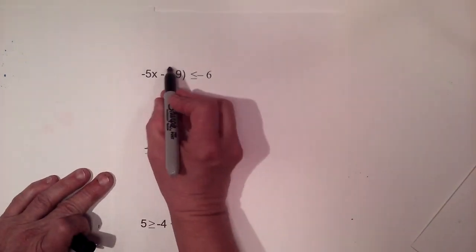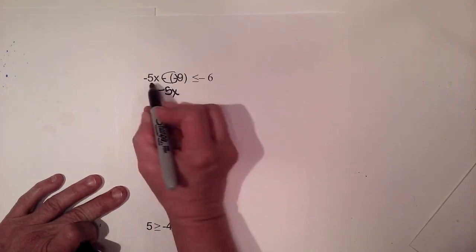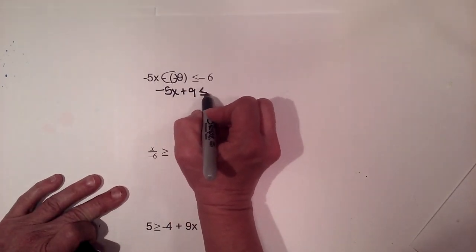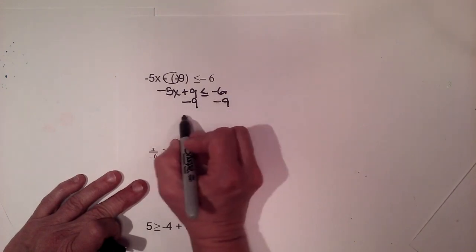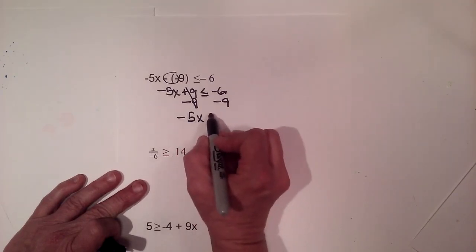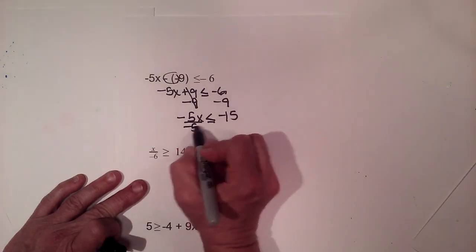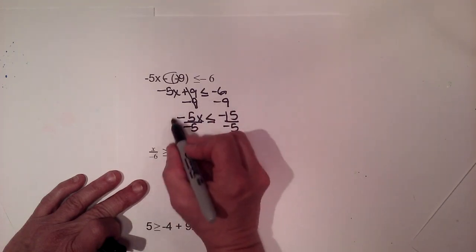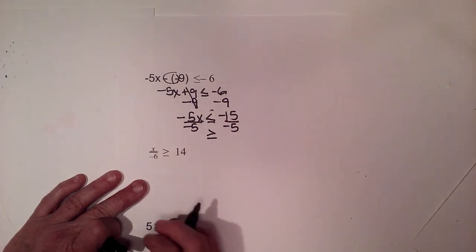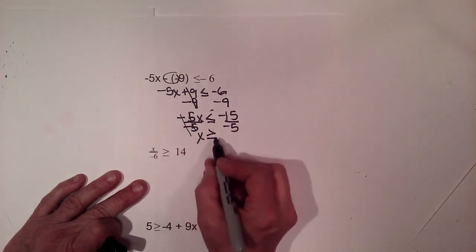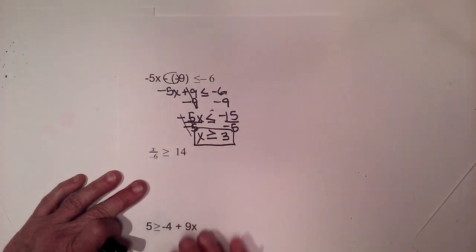Let's simplify: negative five minus a negative nine has a double negative, so that becomes plus, giving negative five x plus nine, less than or equal to negative six. Subtract nine from both sides — the nines cancel, leaving negative five x less than or equal to negative fifteen. Now we divide by negative five. This is the last step, so we flip the inequality from less than or equal to, to greater than or equal to. The fives cancel, and x is greater than or equal to three.